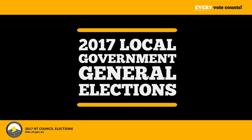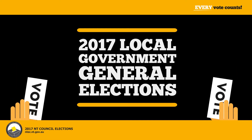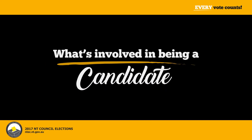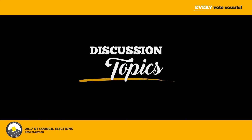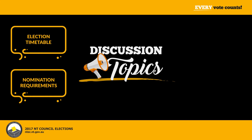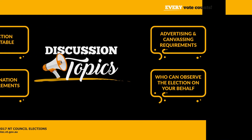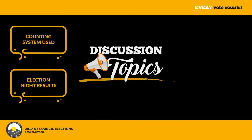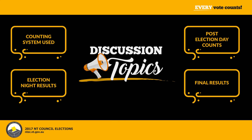Welcome. The following information is provided to assist potential candidates in understanding all election-related requirements. What's involved in being a candidate? Topics to be discussed include the election timetable, the nomination requirements, advertising and canvassing requirements, who may observe the election on your behalf, the counting system used, election night results, post-election day counts, and the final results.